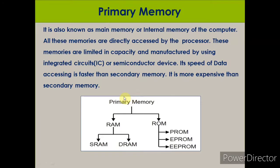Now, primary memory. The computer has two types of memory: primary and secondary. Primary memory is also known as main memory or internal memory of the computer — it is the computer's own memory. All these memories are directly accessed by the processor. They are limited in capacity and manufactured using integrated circuits (IC) or semiconductor devices. Their speed of data accessing is faster than secondary memory, but they are more expensive.